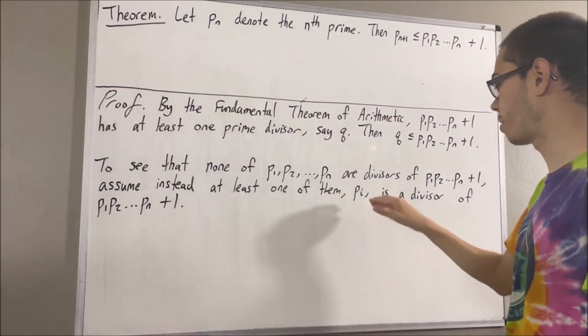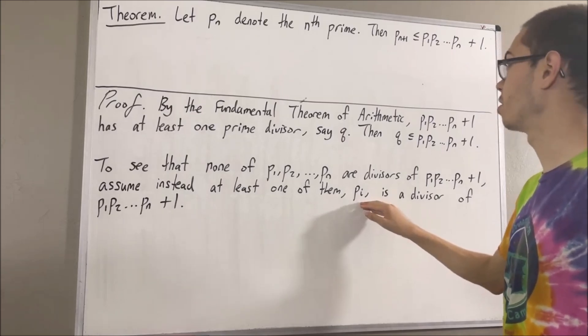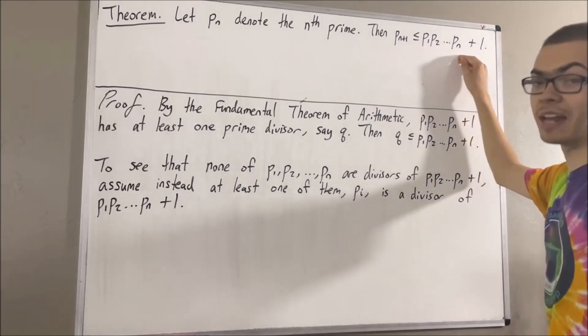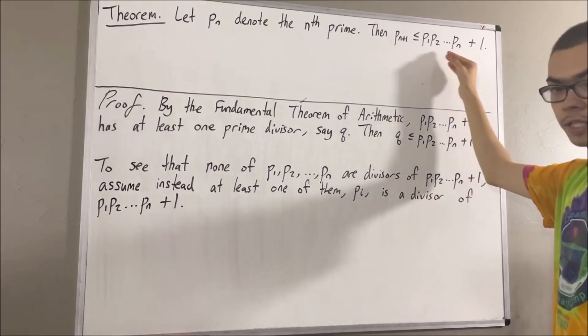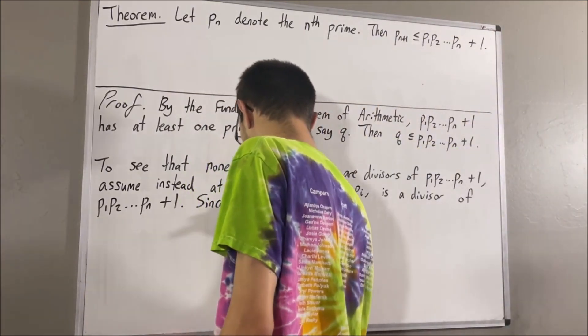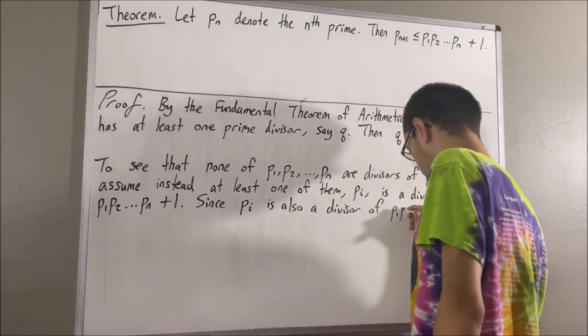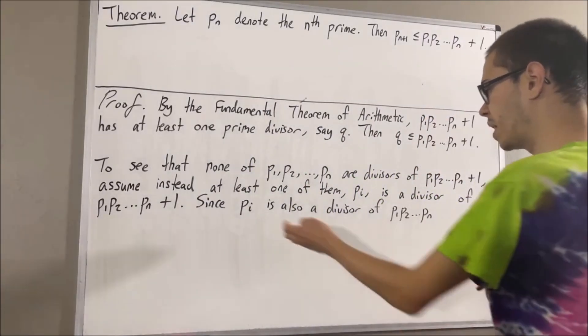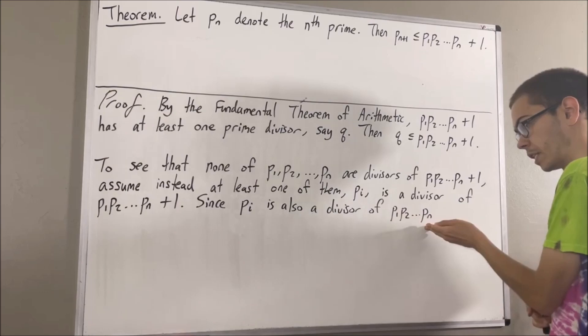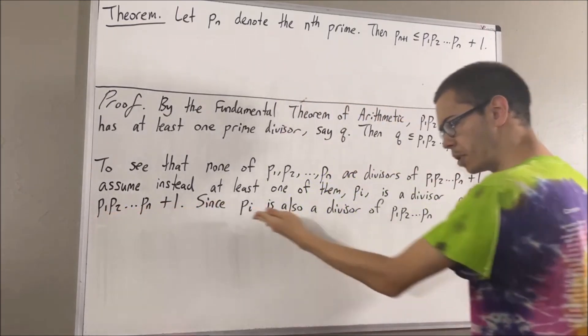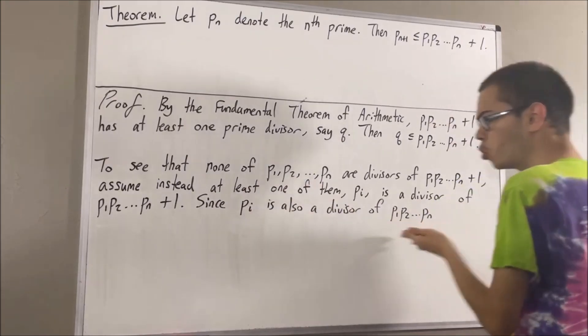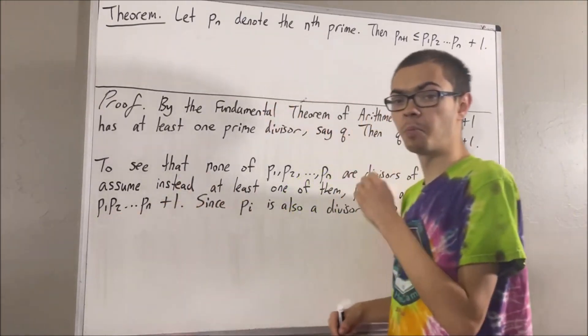Well, we also know that P_i is a divisor of the product of the first n prime numbers because P_i is contained in the product itself. So, P_i is a divisor of this quantity and this quantity, which means P_i is a divisor of two integers that differ by one.